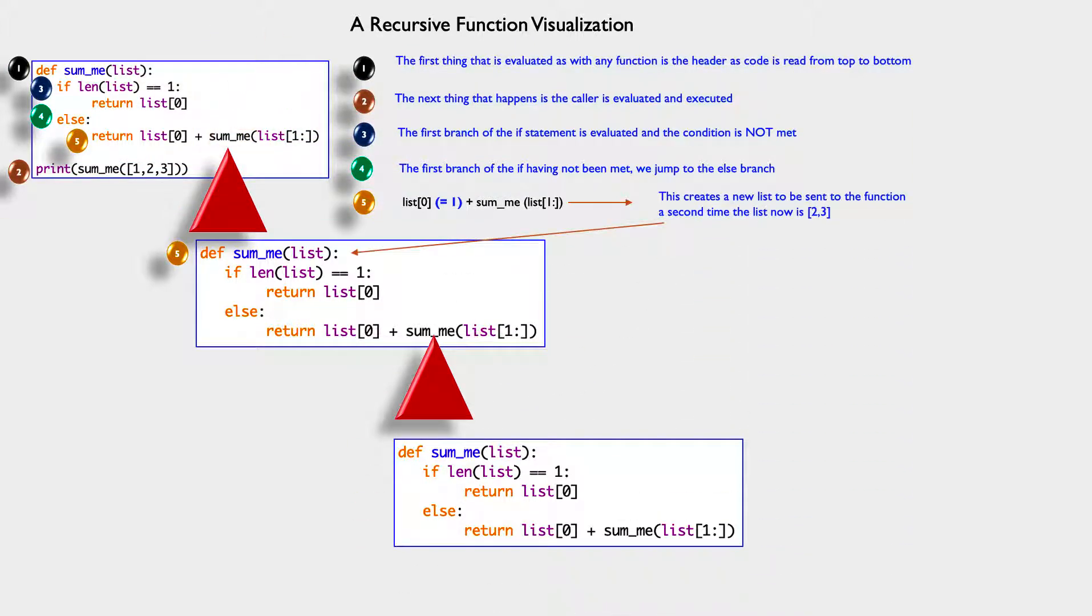This creates a new list to be sent to the function a second time. Now the new list, instead of being one, two, and three at this point, is two and three. That's dictated by that 1: colon.